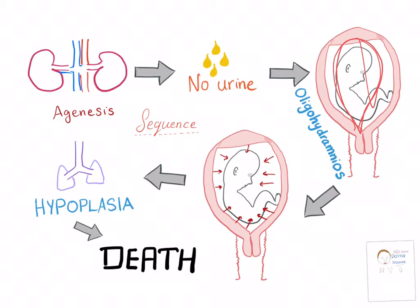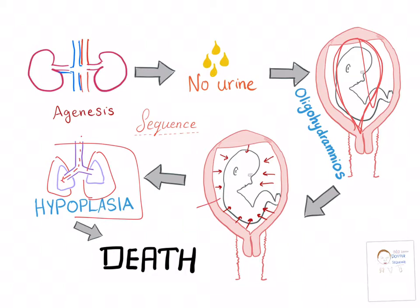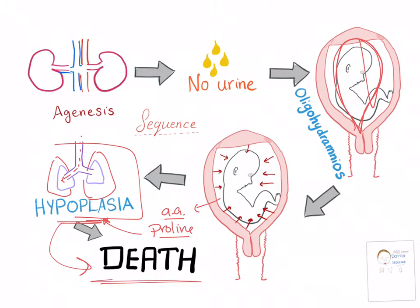This increased pressure leads to many symptoms such as limb abnormalities and lung hypoplasia. Some of the amniotic fluid normally goes inside the lungs to physically inflate them, and it also contains amino acids such as proline that help in the formation of the lungs. So the lungs are not mature or well-formed — this is called lung hypoplasia, and it is the main cause of death in Potter sequence.